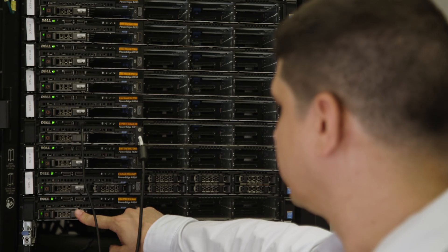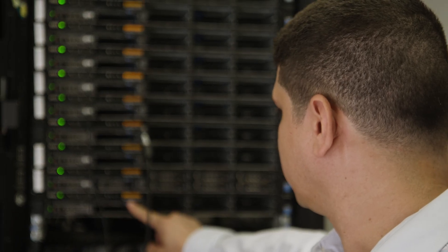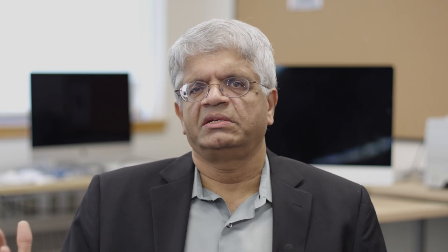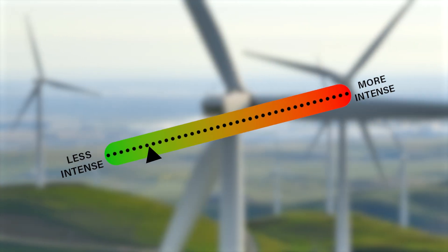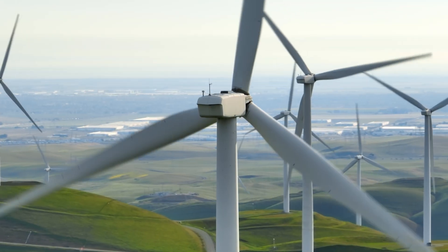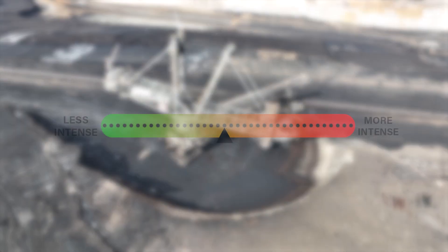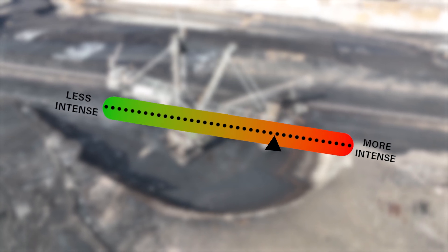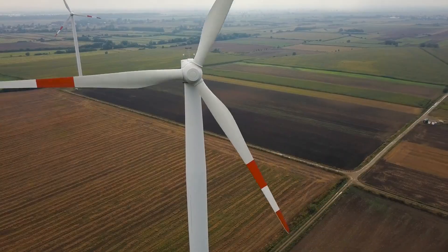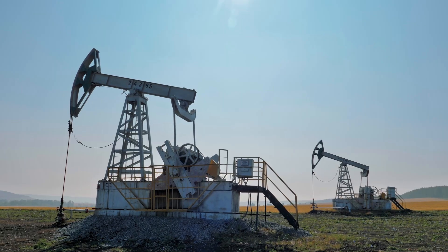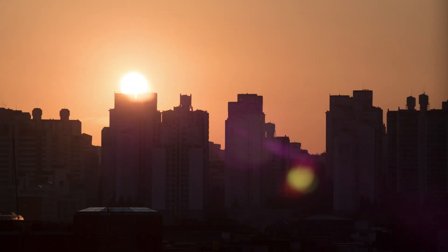To reduce carbon emissions, we need to know the carbon intensity of the electricity. Carbon intensity is the amount of carbon emissions that occur for producing one unit of energy. For example, wind is relatively carbon free, but if you're using coal to produce that energy, you're doing a lot of carbon emissions to produce that same amount of energy. A carbon-aware application is one that's going to be responsive to changes in energy's carbon intensity and in renewable energy availability.